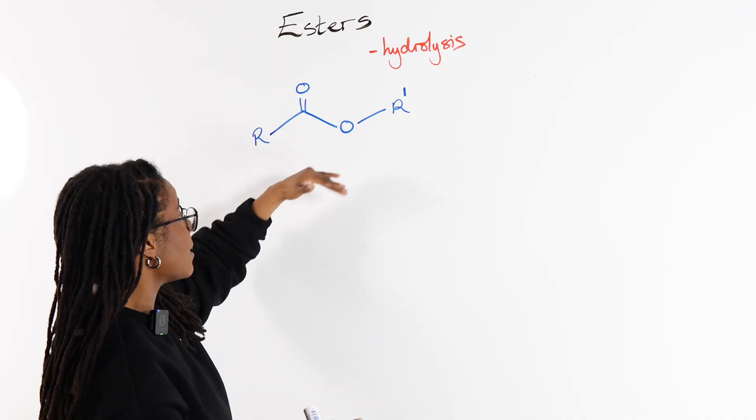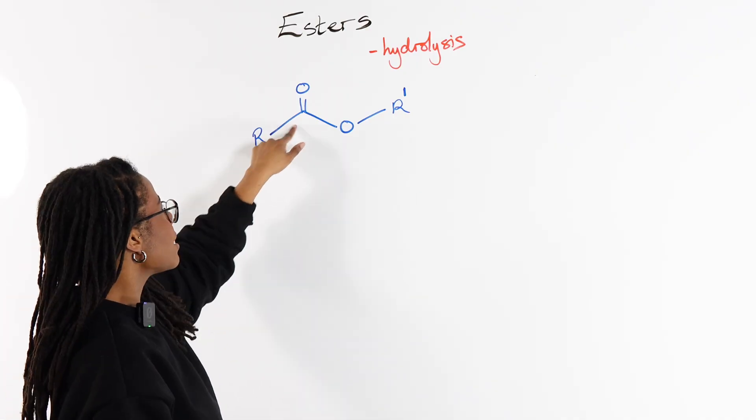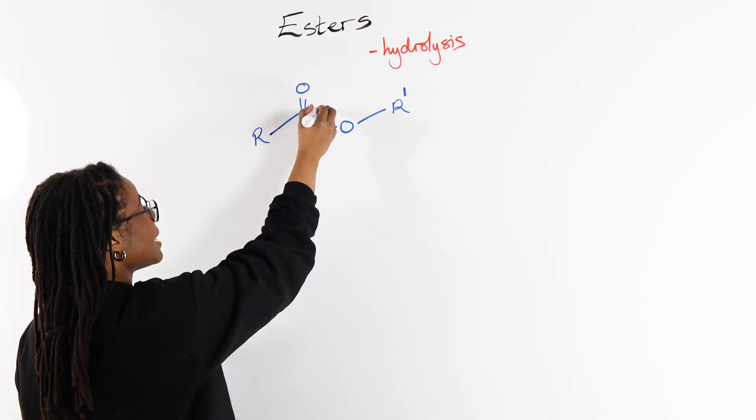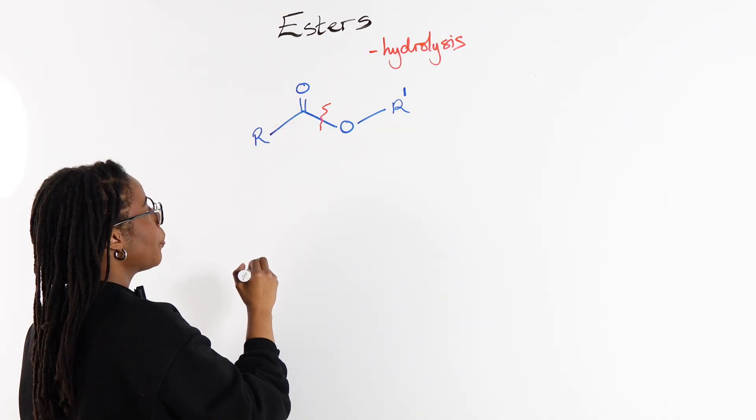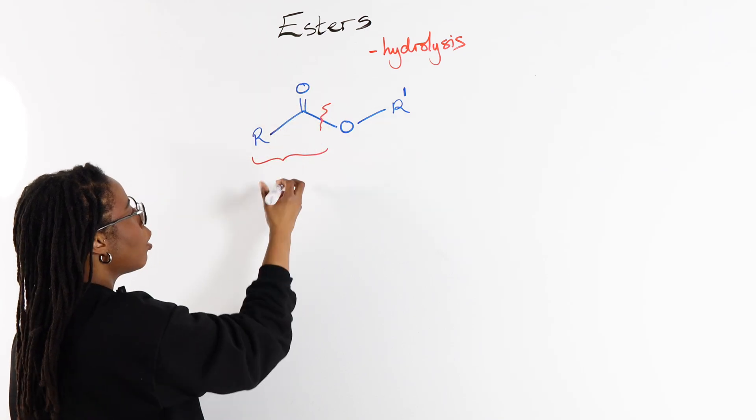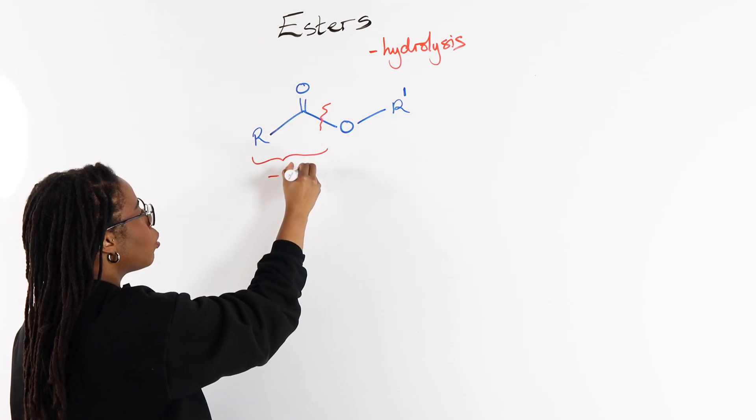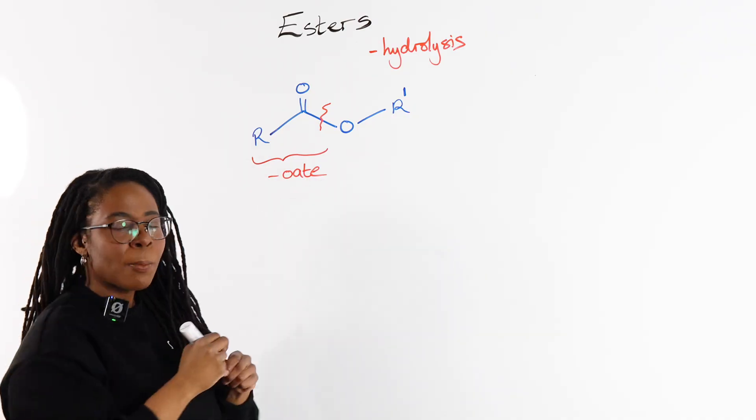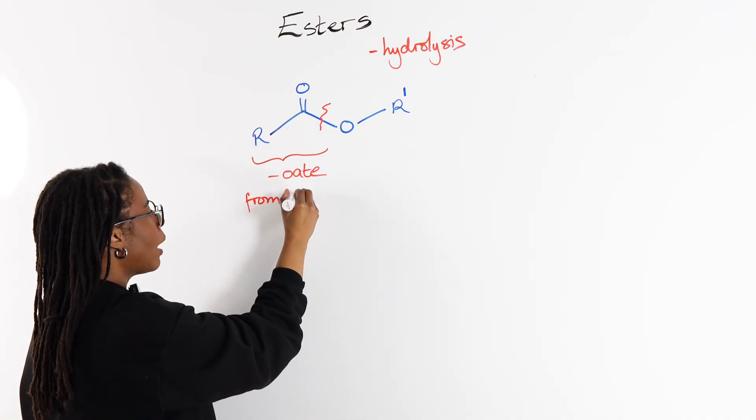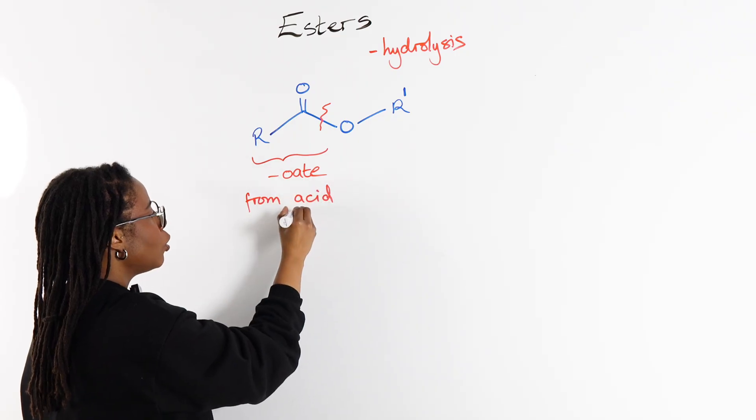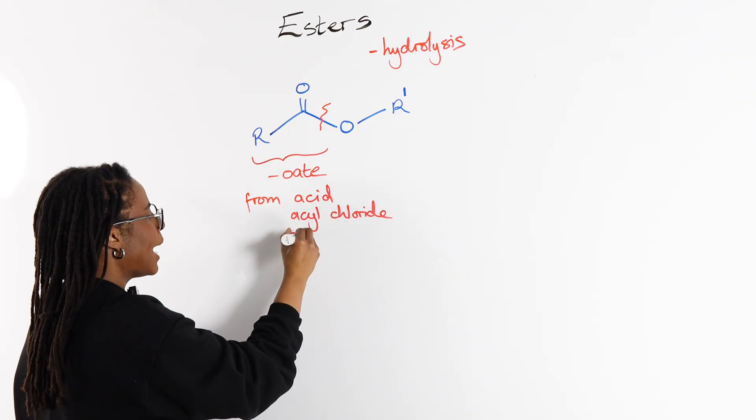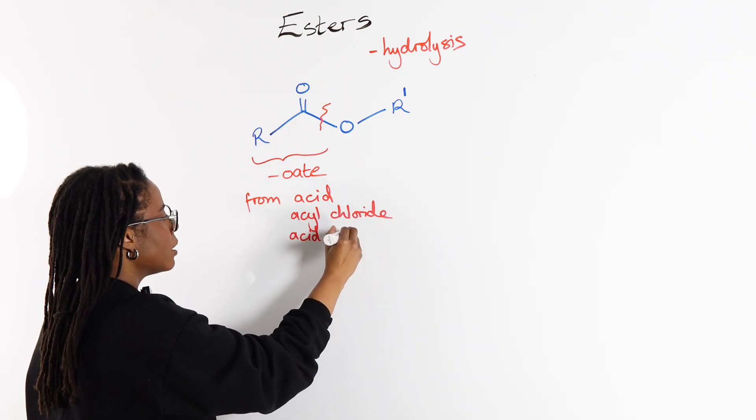Starting with the basics, this is our ester: R-C-O-O-R. Our ester bond is essentially here, where this left part with the C double bond O—that is the part that is your O8, and that's the part that came from either your carboxylic acid, your acyl chloride, or your acid anhydride.